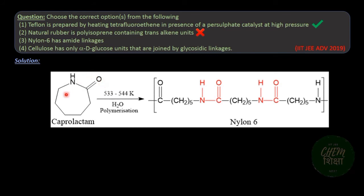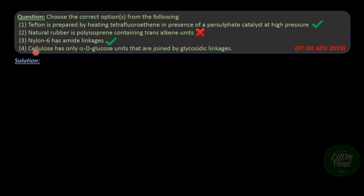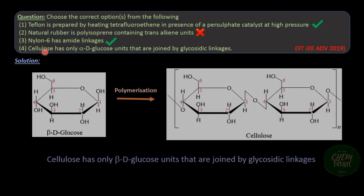Option three: Nylon 6 has amide linkages. Nylon 6 is prepared when caprolactam is heated in water. In Nylon 6, the caprolactam monomers are linked with each other through amide linkages. An amide linkage is the single bond between the carbon atom of a carbonyl group and the nitrogen atom of an amine. So option three is correct.